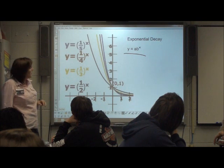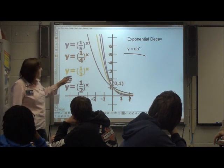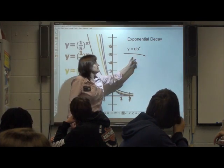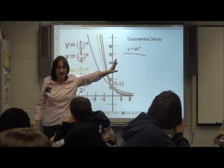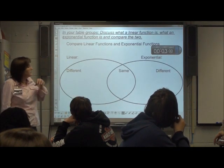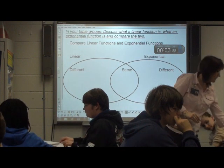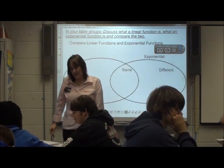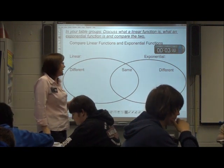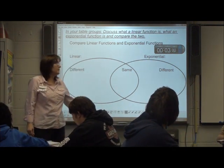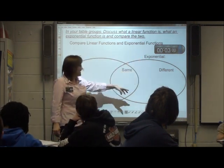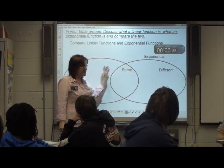Yesterday we talked about a decay model and how those numbers affect it. We also talked about the general form for exponential functions: Y equals AB to the X. Now I want you to think about this because sometimes we confuse linear and exponentials since they can look alike. Talk at your group about what a linear function is, what an exponential function is, how they're the same, and how they're different. I'll give you three minutes.